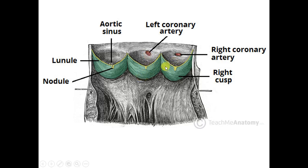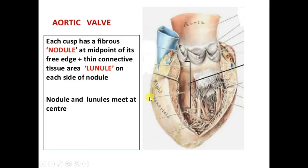An important point: filling of the coronary arteries occurs during diastole. When blood flows back into the aortic sinuses during ventricular diastole, it fills the sinuses and then flows into the coronary arteries. The aortic valve has a fibrous nodule at the midpoint of its free margin, with thin connective tissue lunules on each side, and these nodules and lunules meet at the centre.